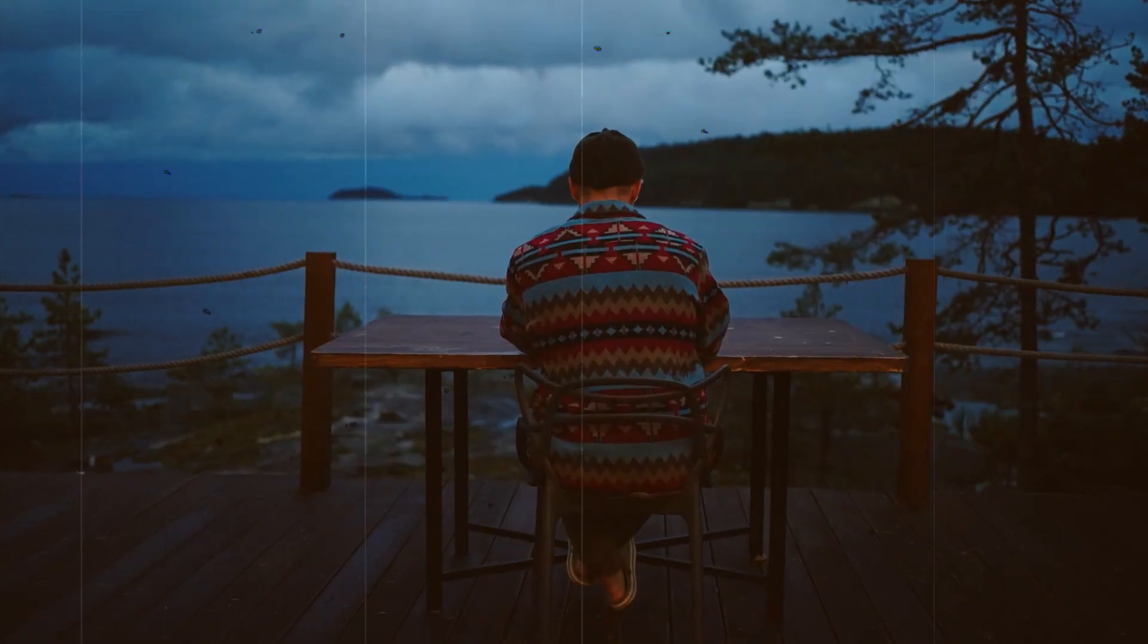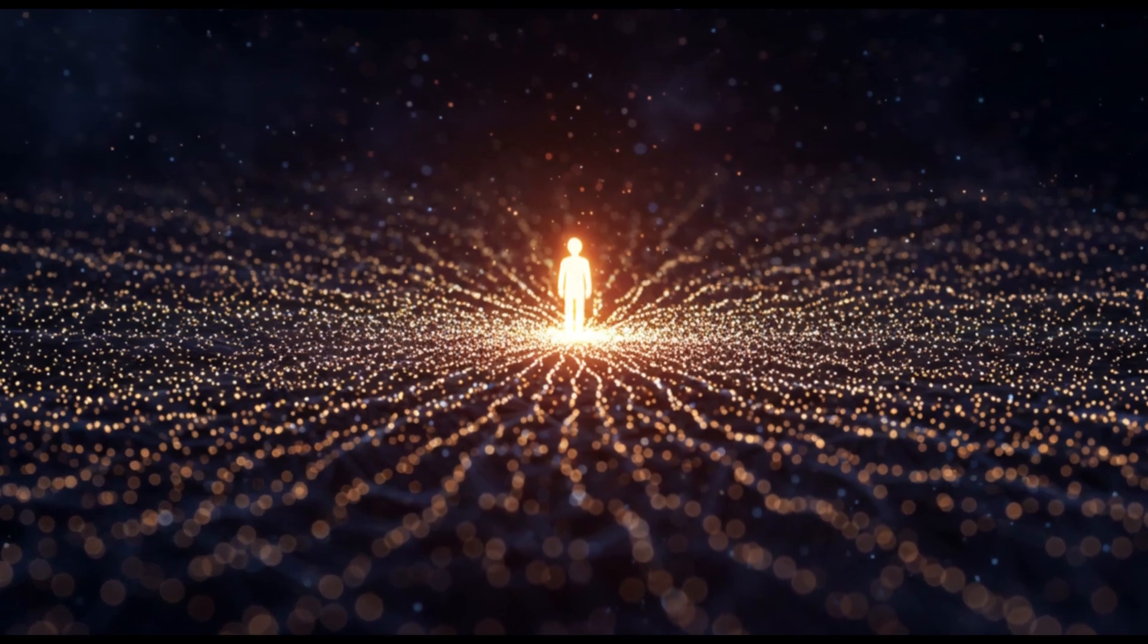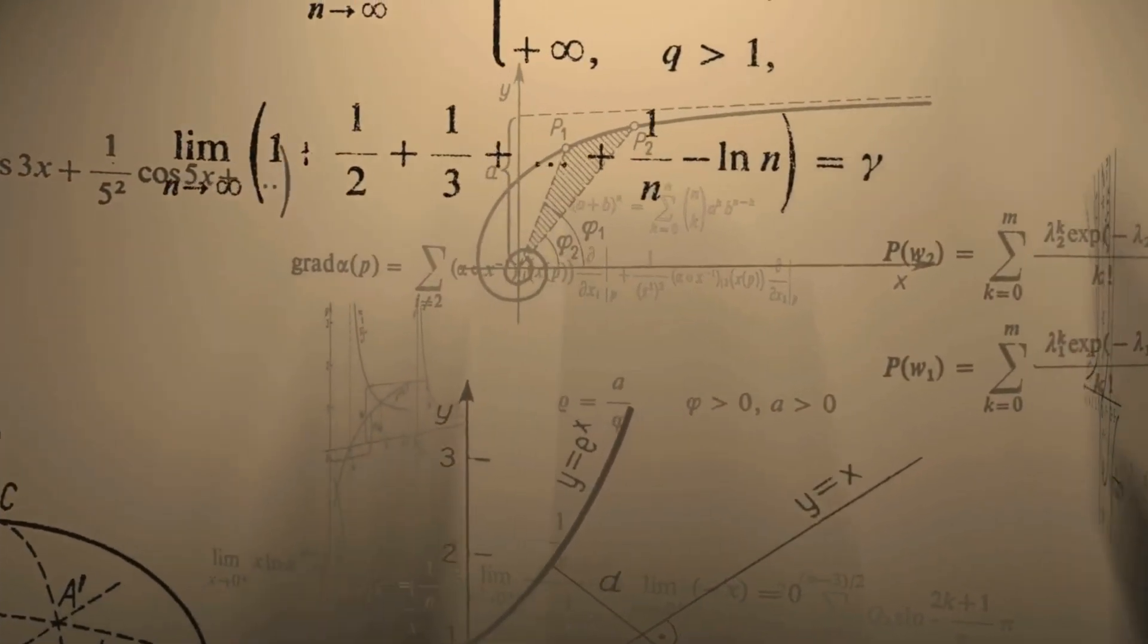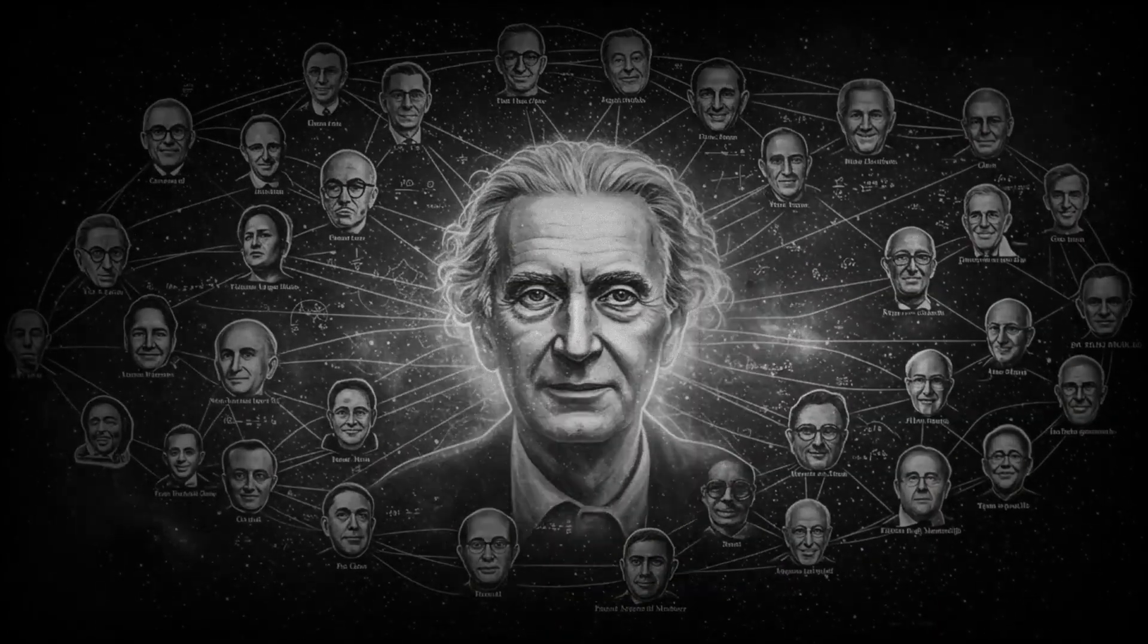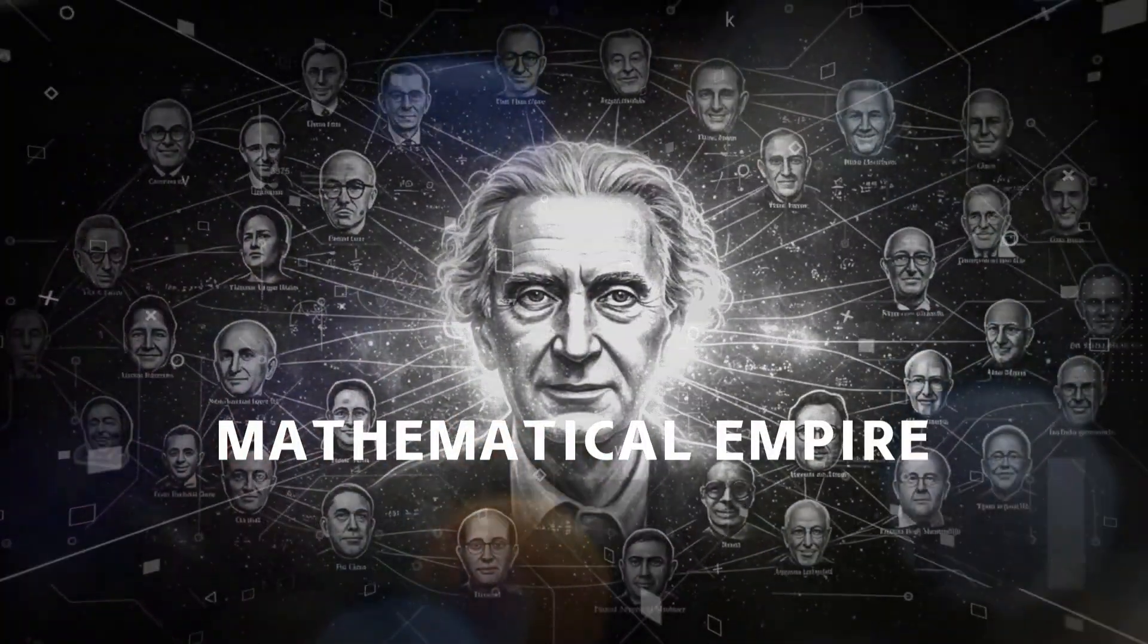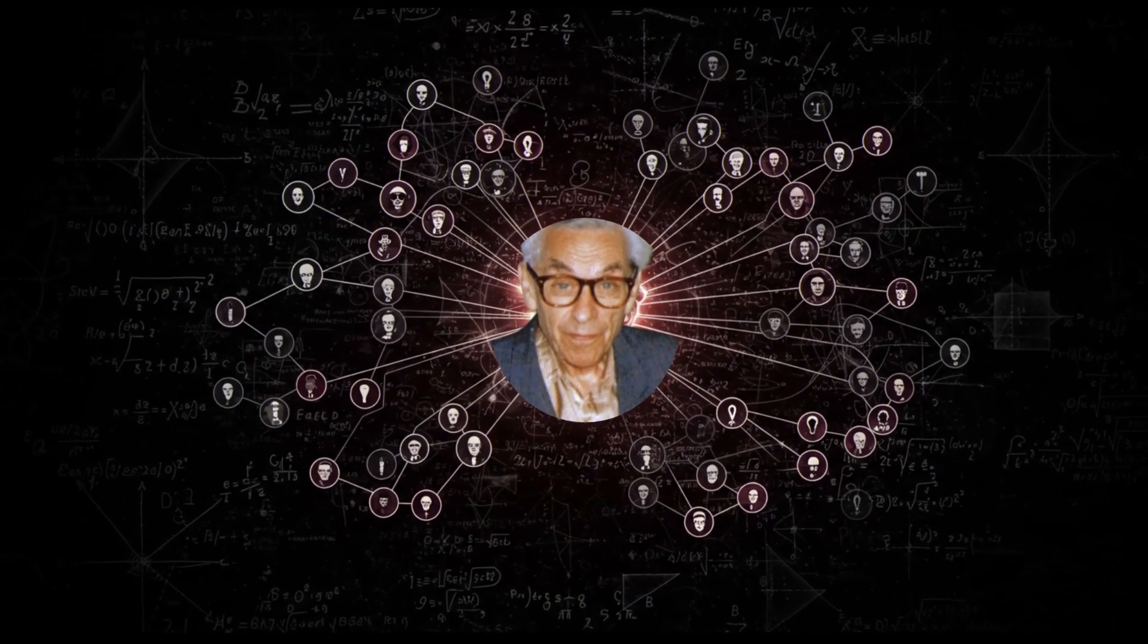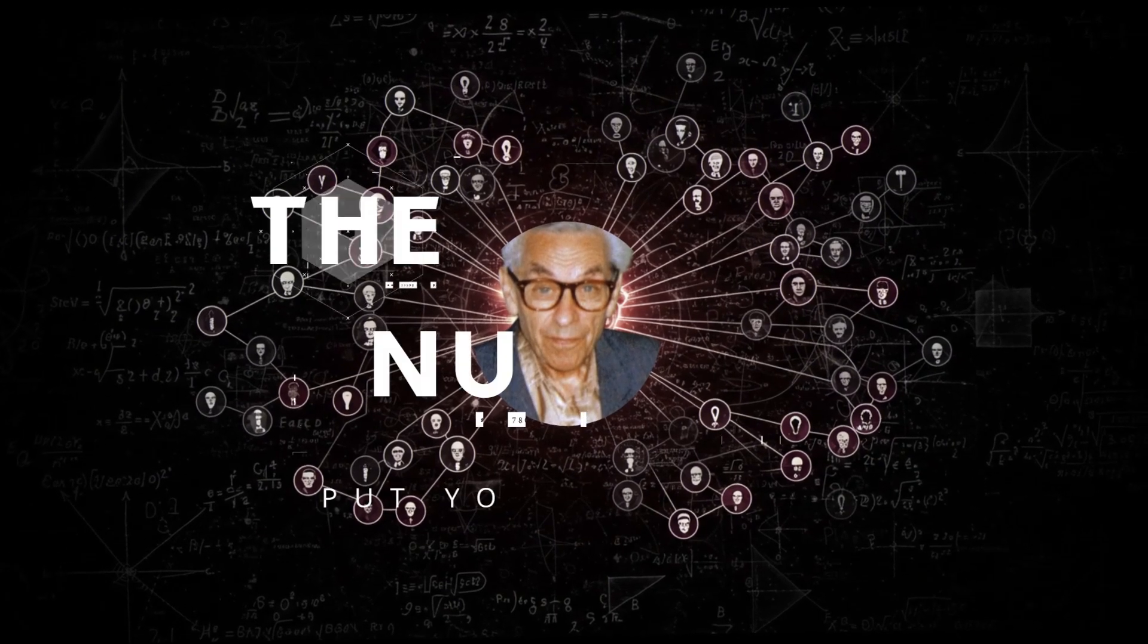Mathematics had always been a solitary field, where lone geniuses worked in isolation. Erdos changed that. He collaborated with over 500 mathematicians, more than anyone in history, proving that ideas grow stronger when shared. To Erdos, mathematics wasn't a competition. It was a global conversation, one proof at a time. Erdos may have never had a home, but he built something far greater. A mathematical empire connected by a simple idea: sharing knowledge. And his impact didn't end when he left this world. In fact, that's where one of his greatest legacies begins. The Erdos number.